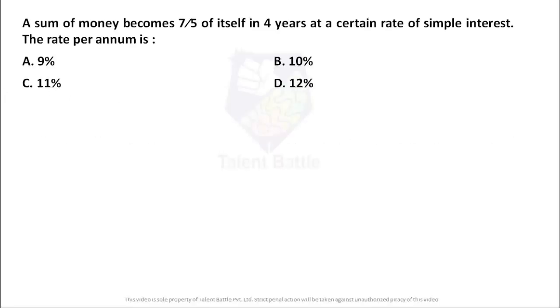This question is asked by Abhishek from Anurag Group of Institution. Let's check the question. A sum of money becomes seven by five of itself in four years at certain rate of simple interest. The rate per annum is. Now the formula for simple interest as we know it is PRT by hundred, principle, rate of interest and time. Now whenever you are going to face these type of questions where they will say two times, three times or like seven by five times of that particular amount, to make it easy consider the principle as hundred rupees.